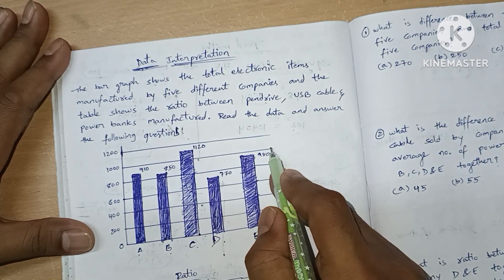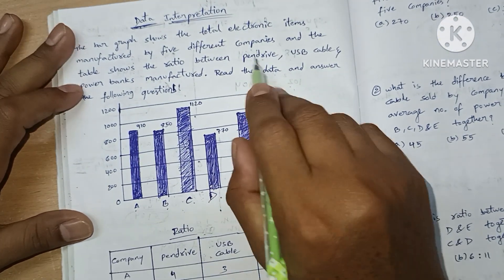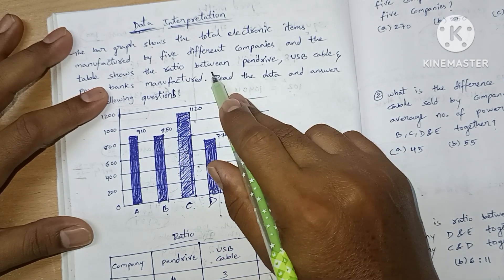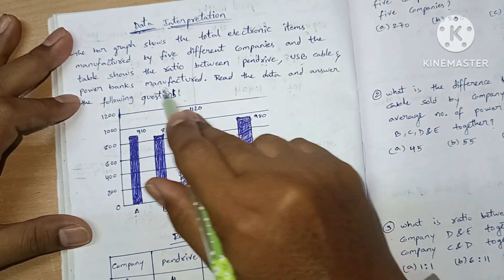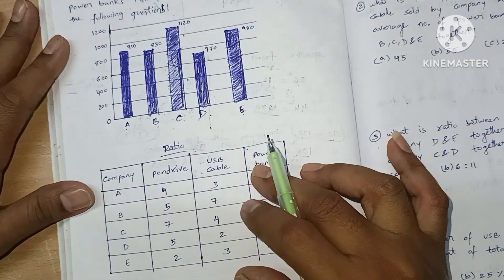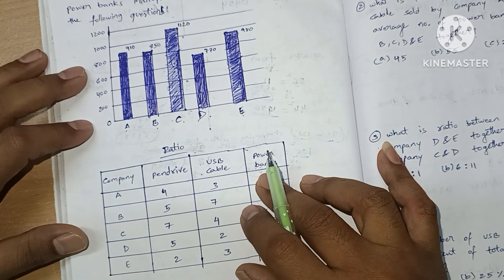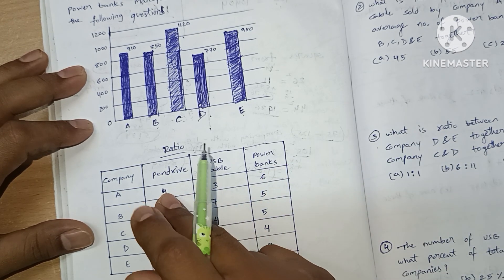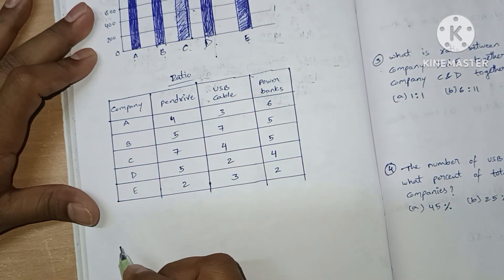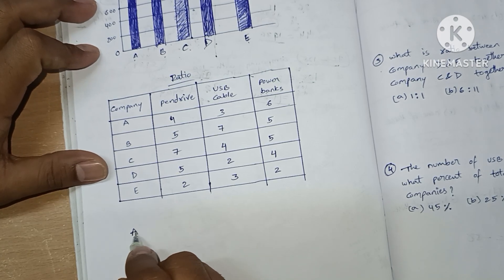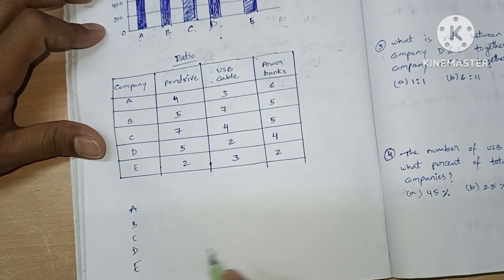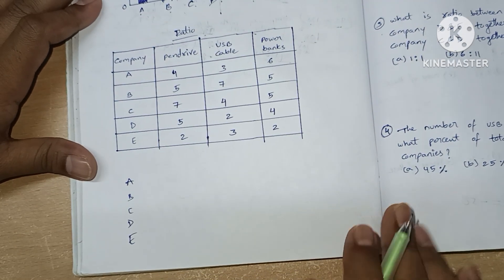We have been given the values. The table shows the ratio between pen drives, USB cables, and power banks manufactured. So the given table contains the ratios. Now we need to calculate the exact values. Let's make another table with values for companies A, B, C, D, and E.